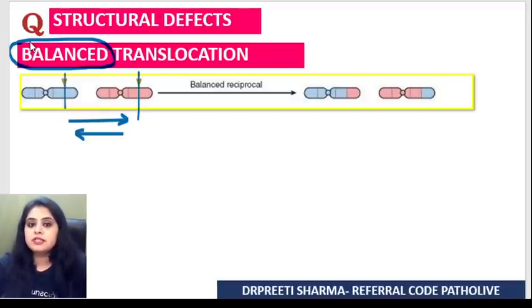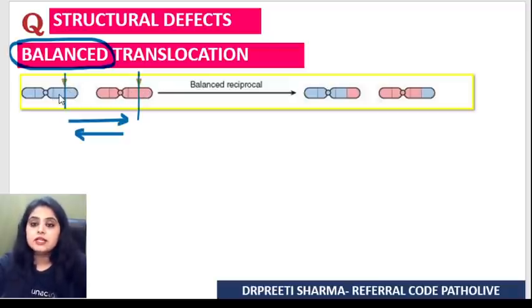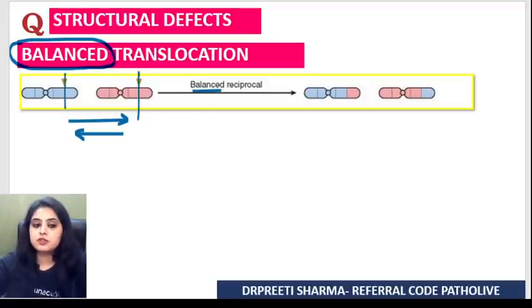If the balance wouldn't have been maintained — one gave to the other and nothing got back in return — you would call it an unbalanced translocation. Here, it's a proper give and take, so it's a balanced translocation.